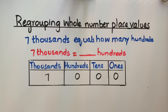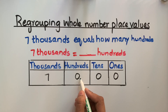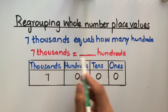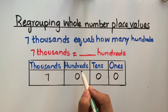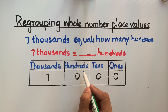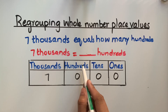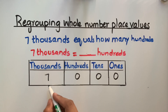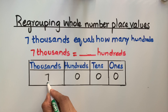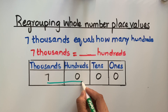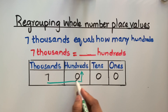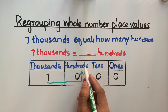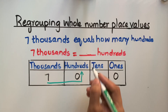Seven thousand is equal to how many hundreds? Since we have to find out about hundreds, we focus on the hundreds column and read this number from the left until the hundreds column. Starting from the left and reading till the hundreds column: seven with one zero is seventy. So seventy hundreds are in seven thousand.